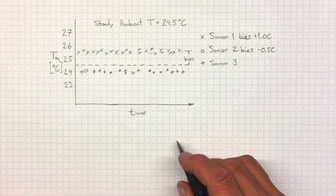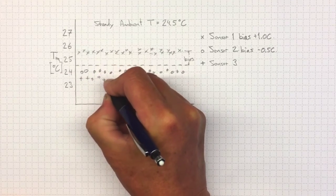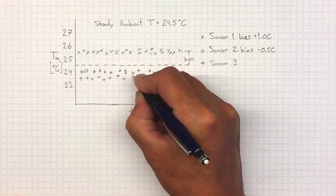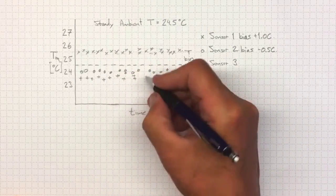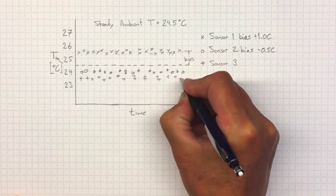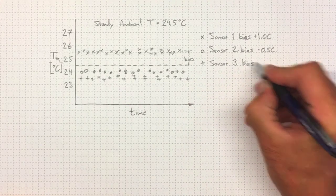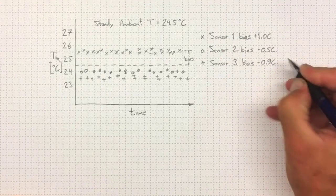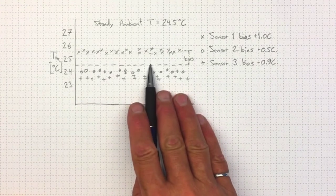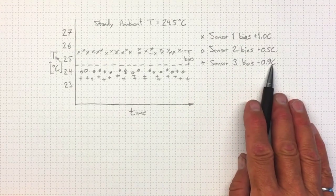Now, if I went and measured with sensor number three and I wound up down here, then sensor number three has also got a negative bias. And its negative bias might be minus 0.9 degrees C. So if I took that one and calibrated it back to the mean, I could get a pretty good estimate out of sensor number three as well.